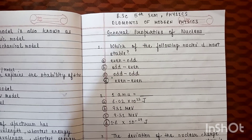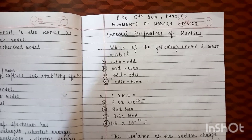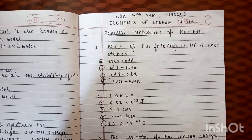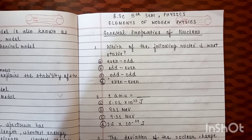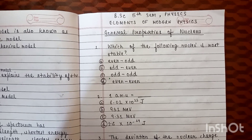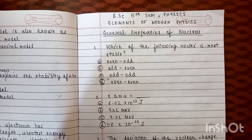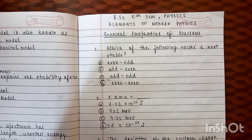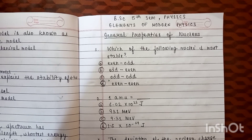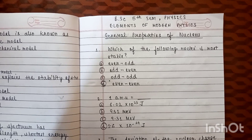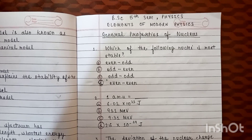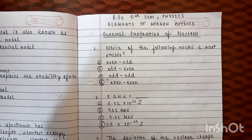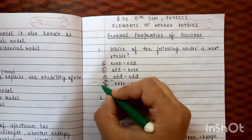First question: which of the following nuclei is most stable? Option A: even-odd. Option B: odd-even. Option C: odd-odd. Option D: even-even. The correct option for this is option D.